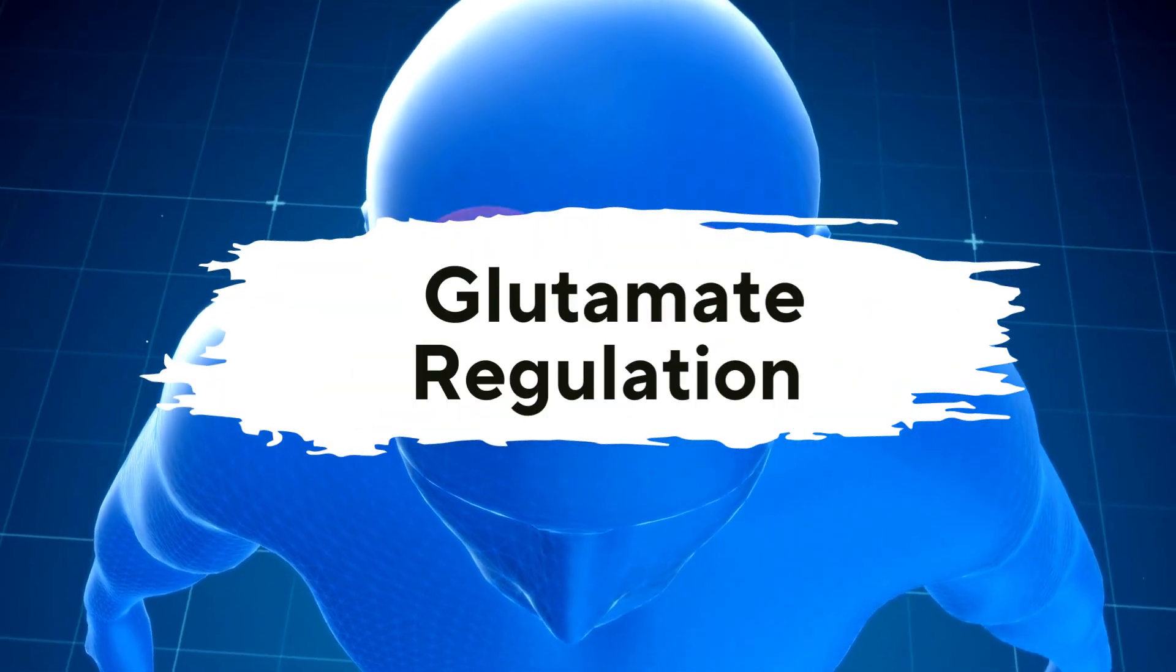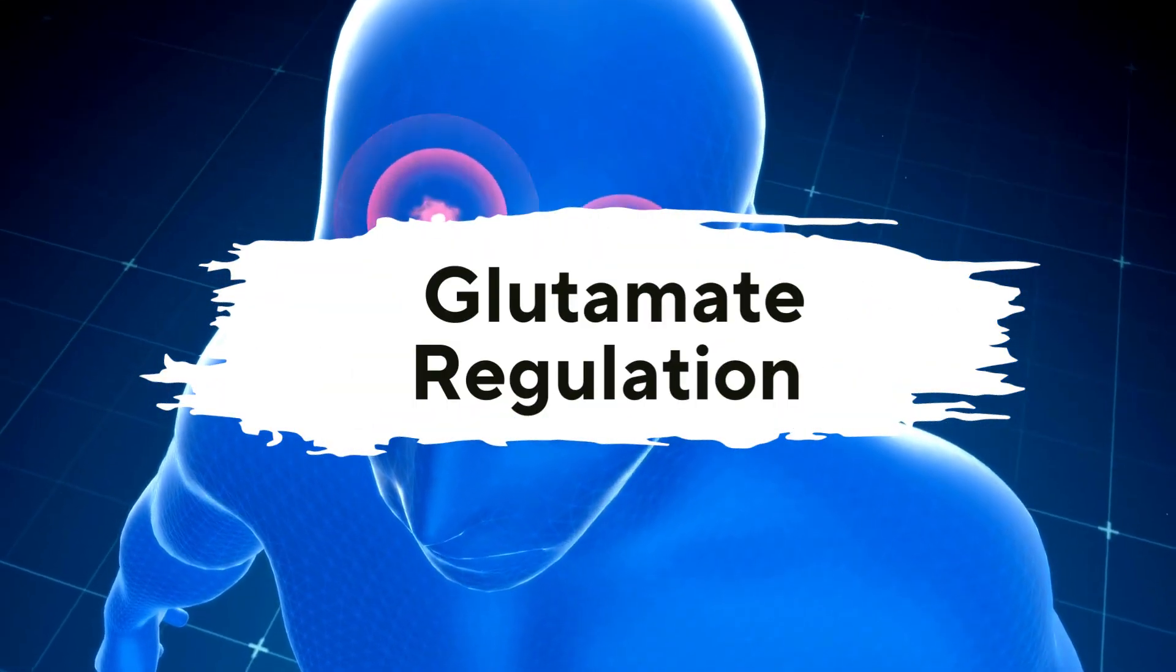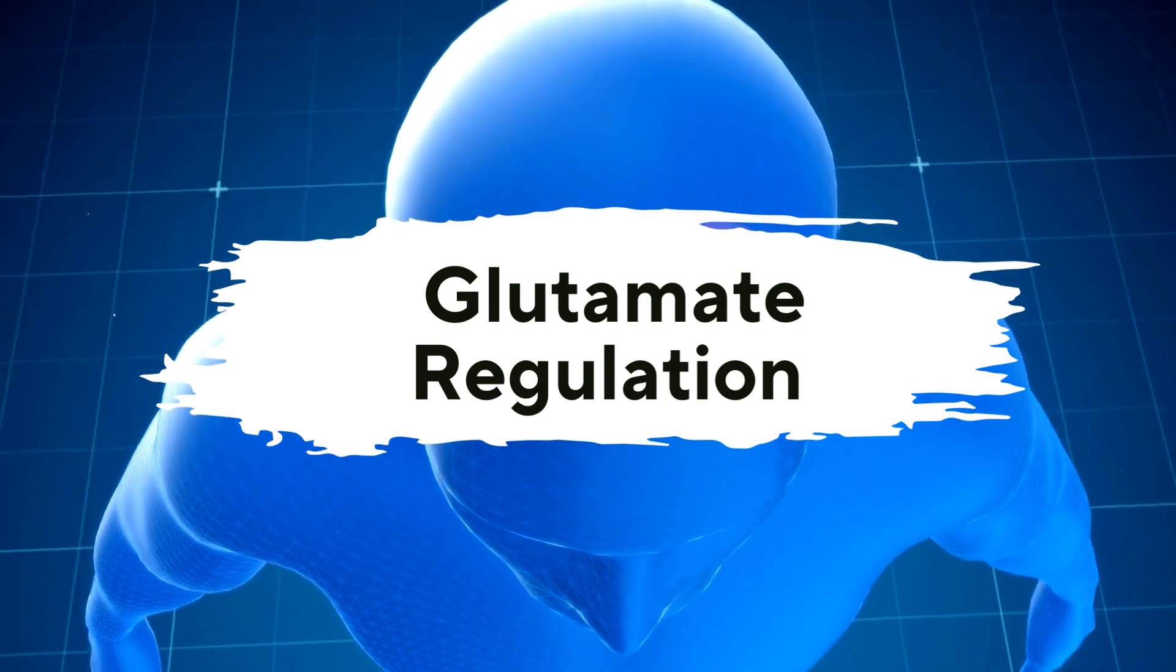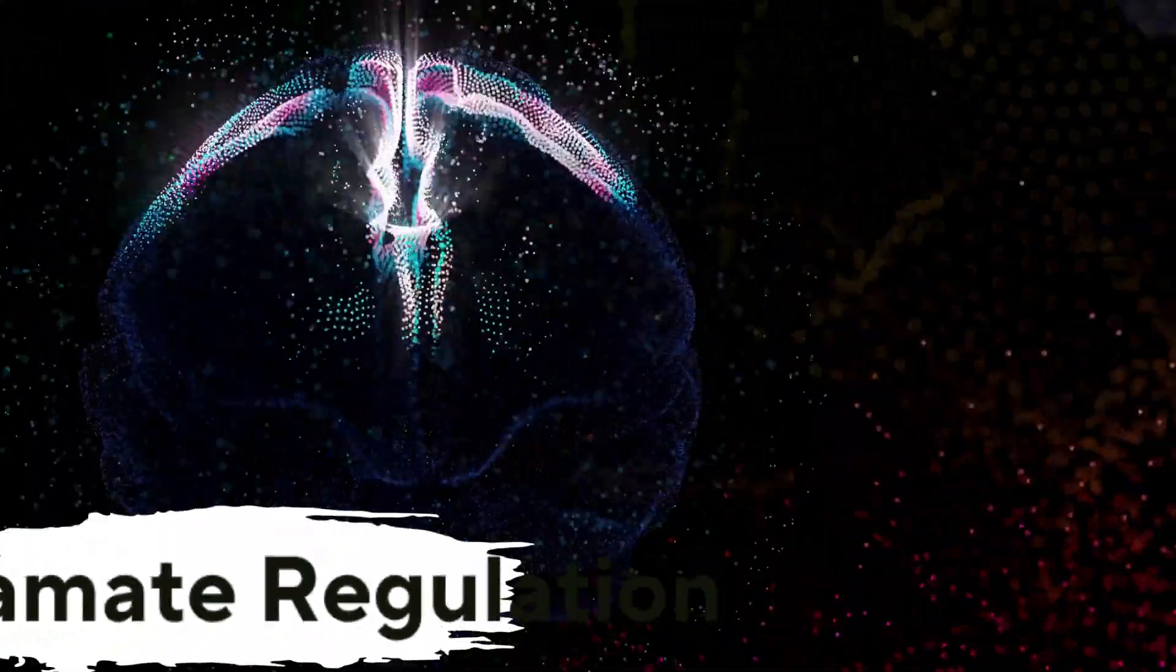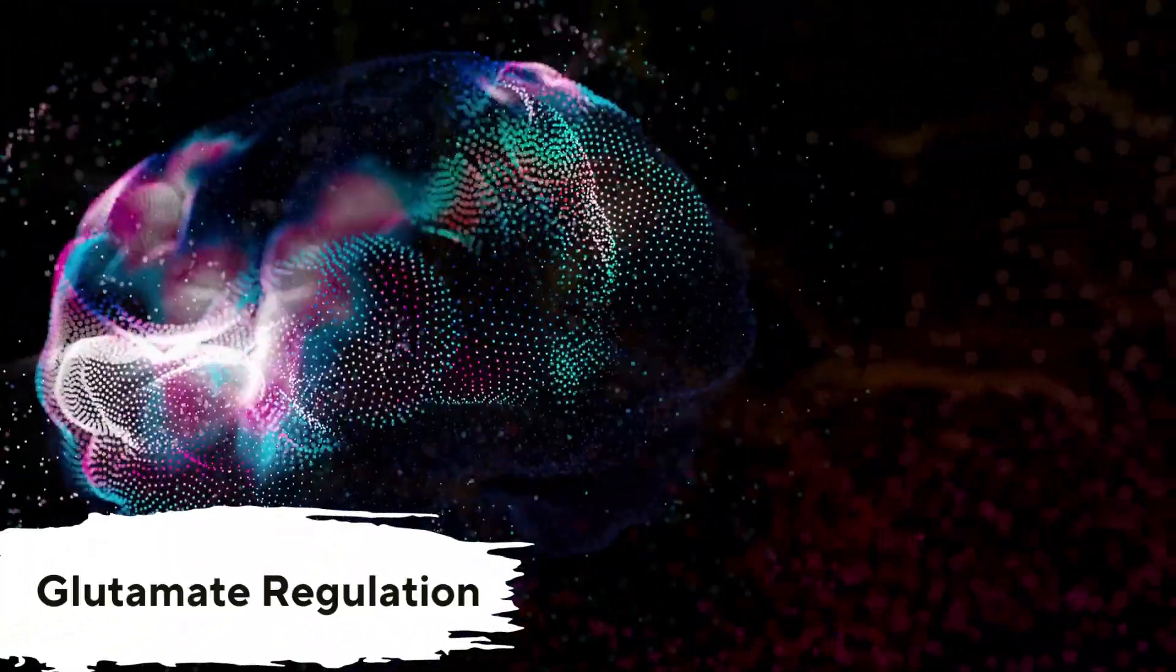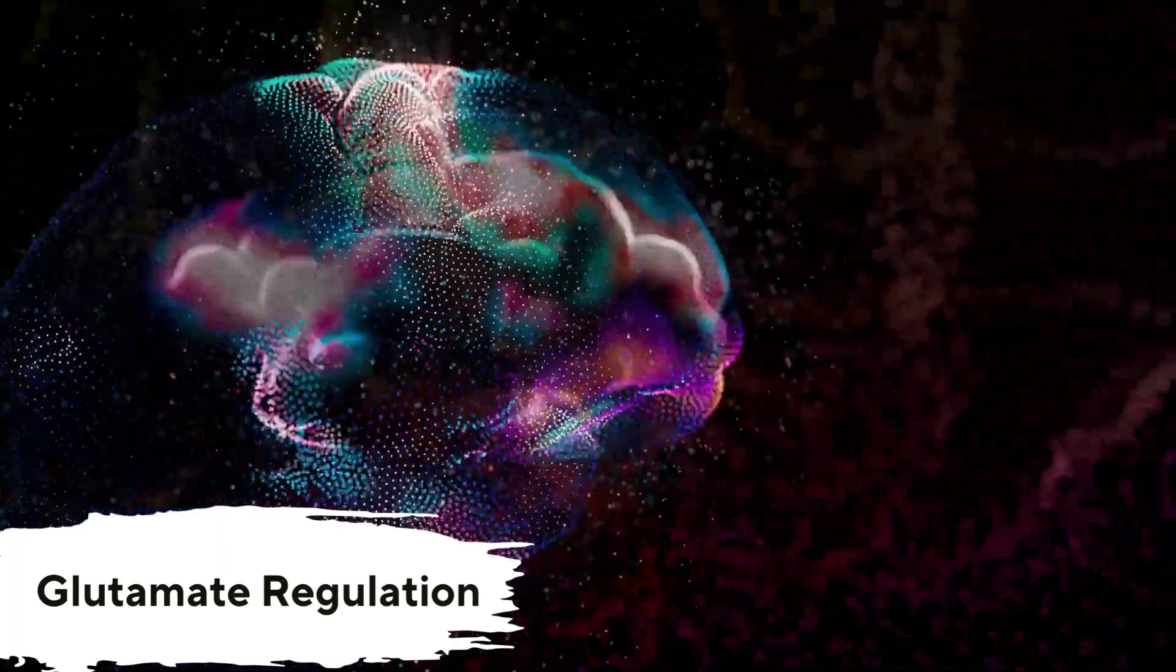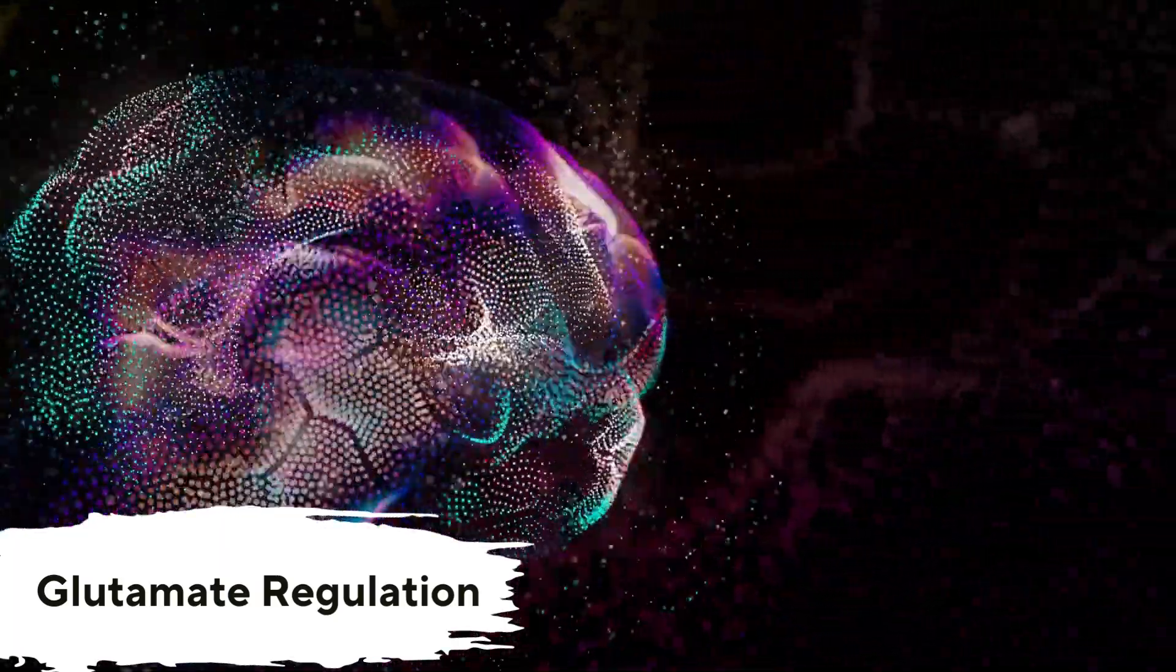Regulation. The concentration of glutamate in the synaptic cleft is tightly regulated to prevent excessive excitation. Glutamate is taken up by astrocytes and converted into glutamine, which is then transported back to neurons and converted back into glutamate.